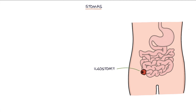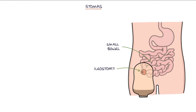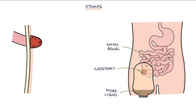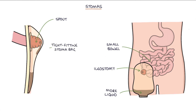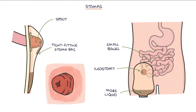An ileostomy is where the end portion of the small bowel or the ileum is brought onto the skin. The stools that come out of an ileostomy are more liquid because the fluid content of the stool is normally reabsorbed in the large intestine. Ileostomies have a spout which allows them to drain directly into a tight-fitting stoma bag without the contents coming into contact with the surrounding skin, because the liquid stools are very irritating to the skin. They're typically located in the right iliac fossa.